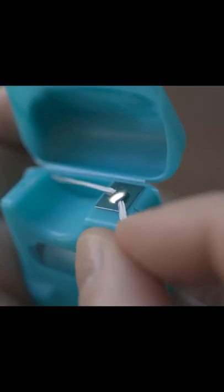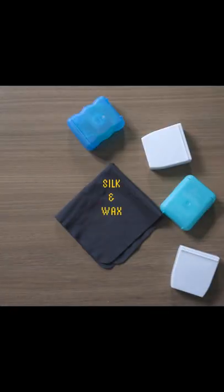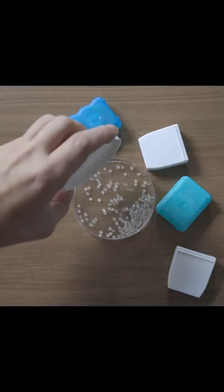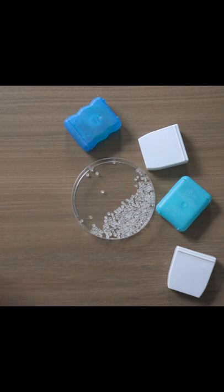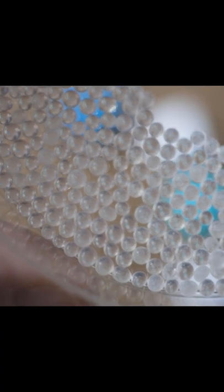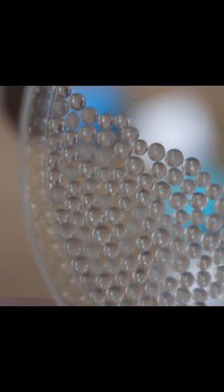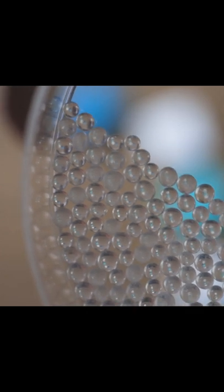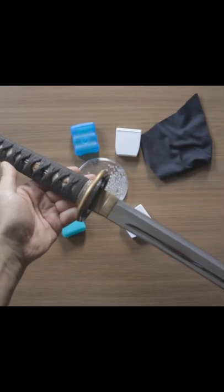During the 1800s, dental floss was made of silk and wax. Today, manufacturers use plastic beads like these. They stretch and fold these beads until the floss becomes very strong, just like how Japanese swords are made.